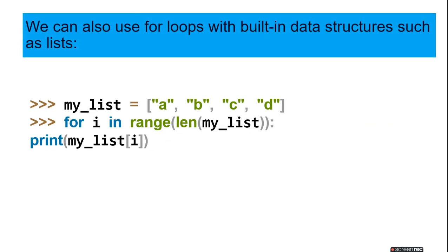We can also use for loops with built-in data structures such as lists. My_list equals a, b, c, d. For i in range len my_list, print my_list i. Here the length will become 4, and print my_list i. It will print each item according to position 0, 1, 2, 3.